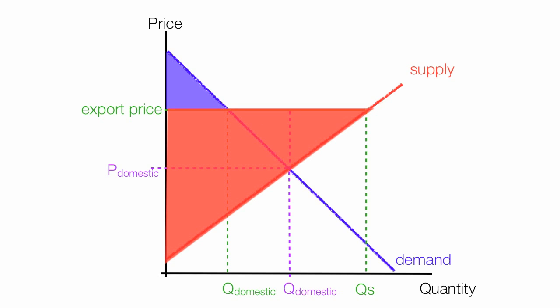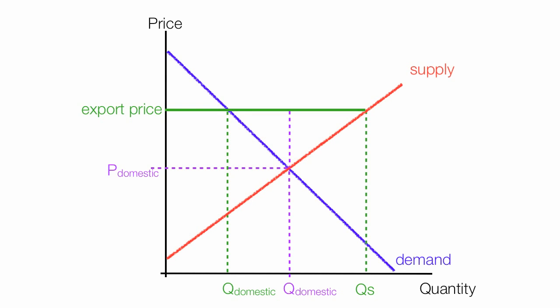For lack of better terms, consumers are hurt and producers benefit from exporting. Often countries will have an export tax, and this is the new export price minus the tax. The supplier sees the domestic price and export price as the same now.